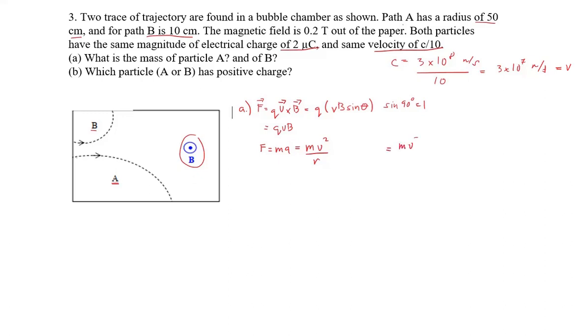Now to determine the masses we need to equate the two together. That's going to be MV squared over R equals QVB. We cancel one V and are left with M equals QBR over V. So now we're ready to find the mass of particle A.